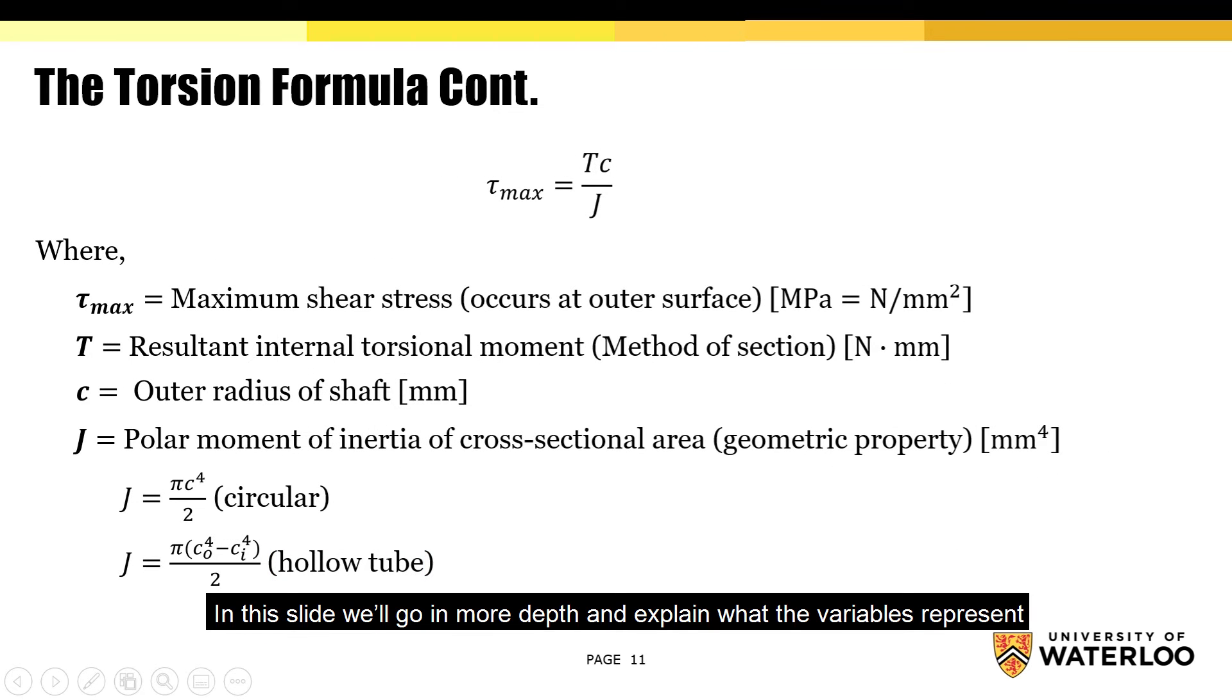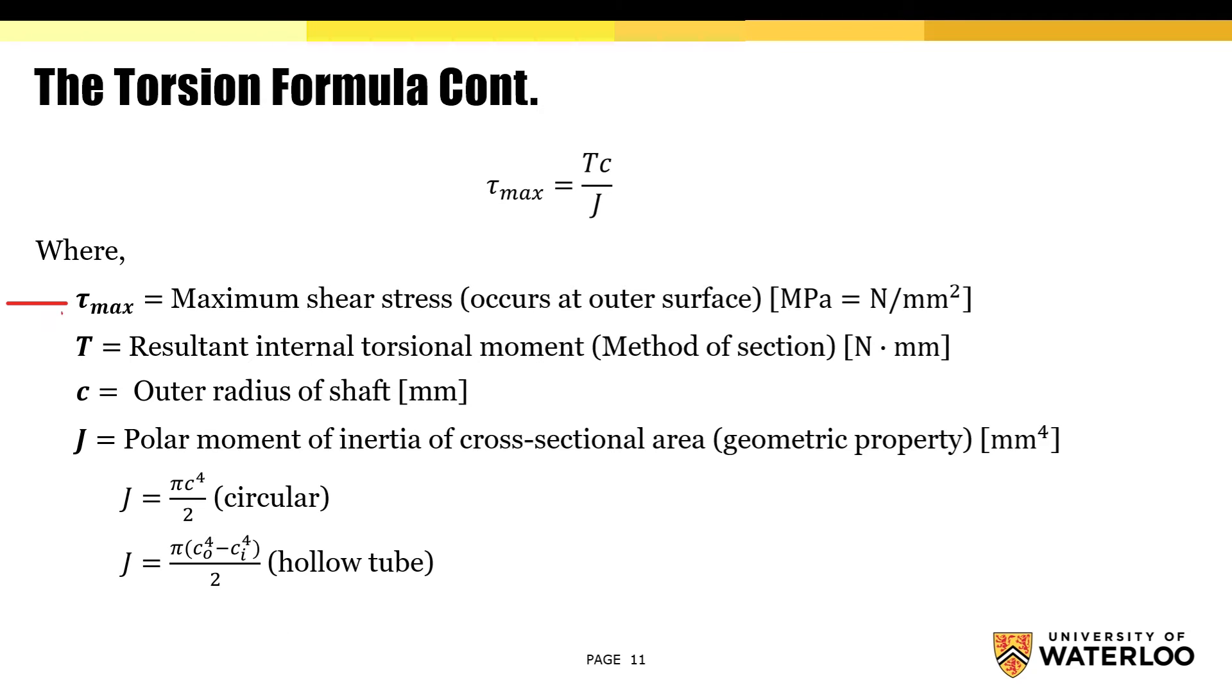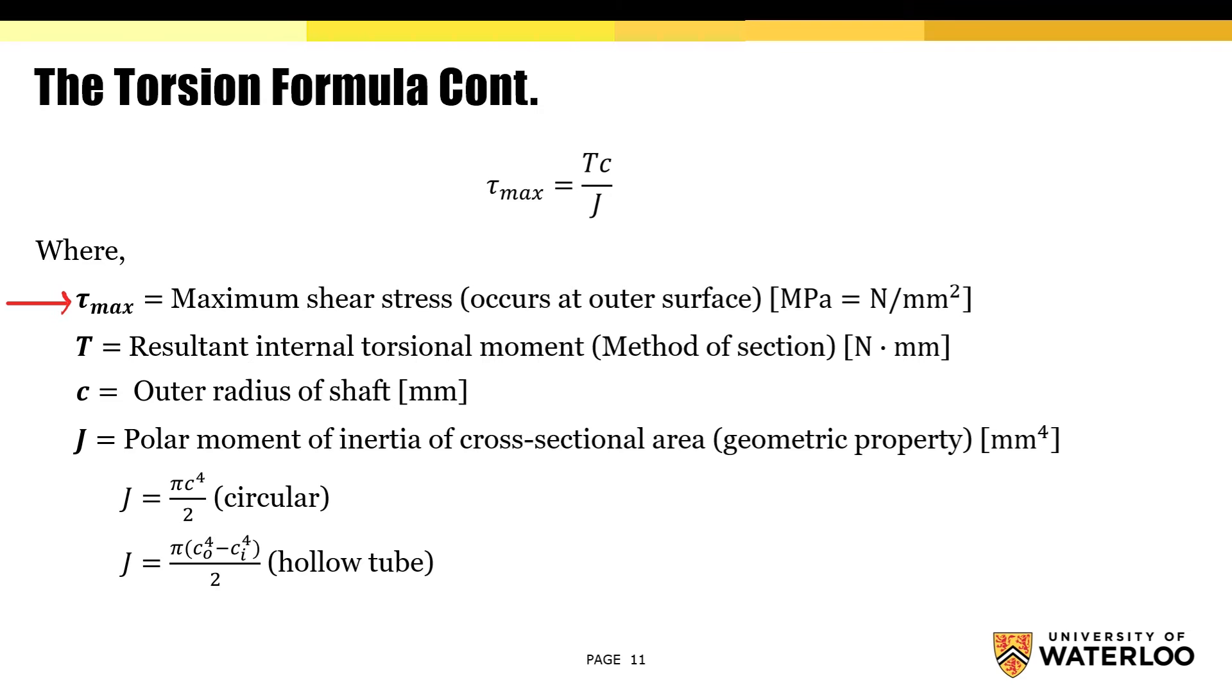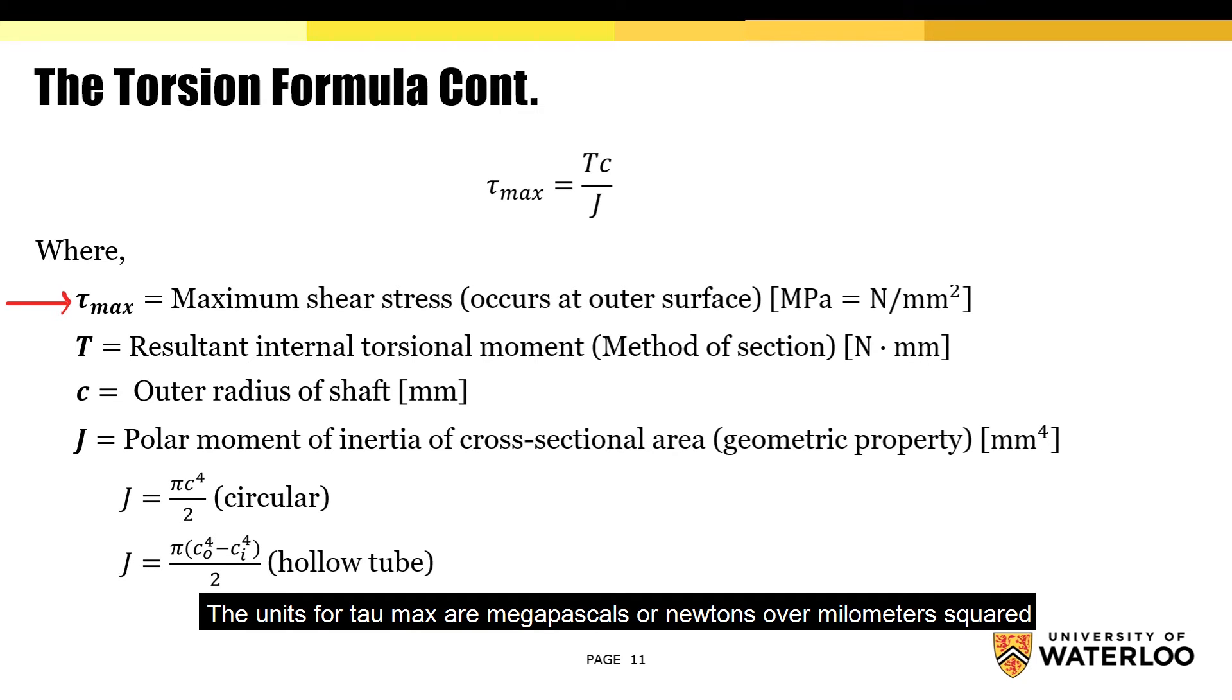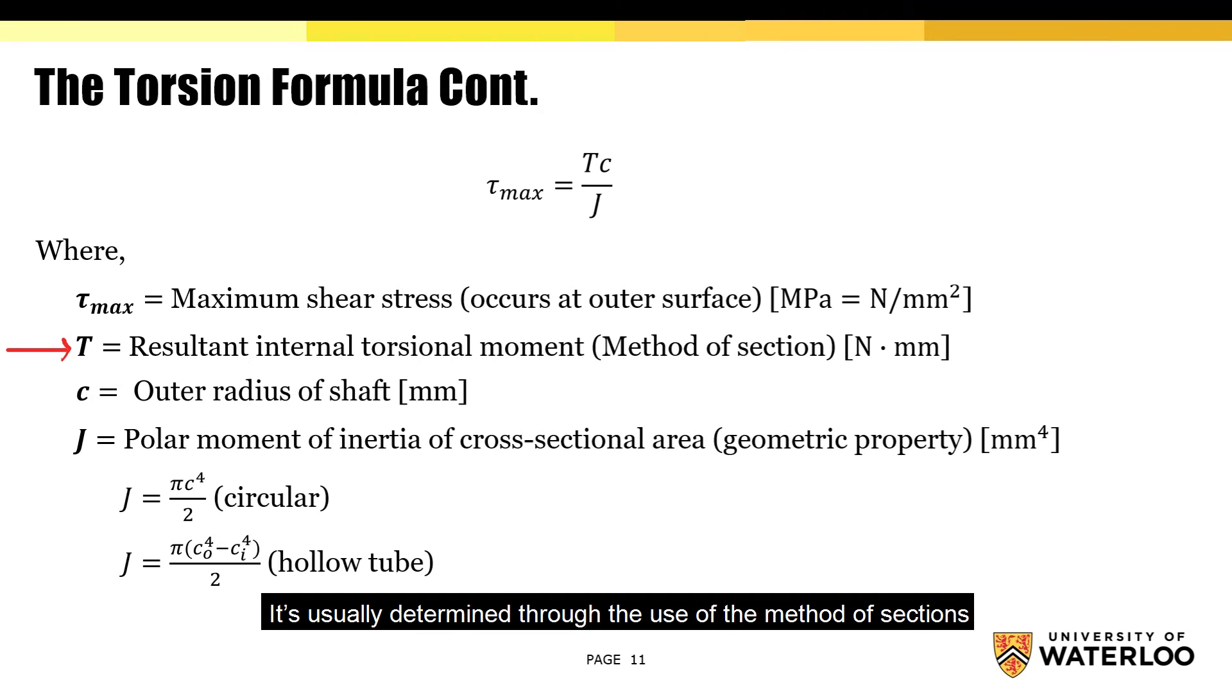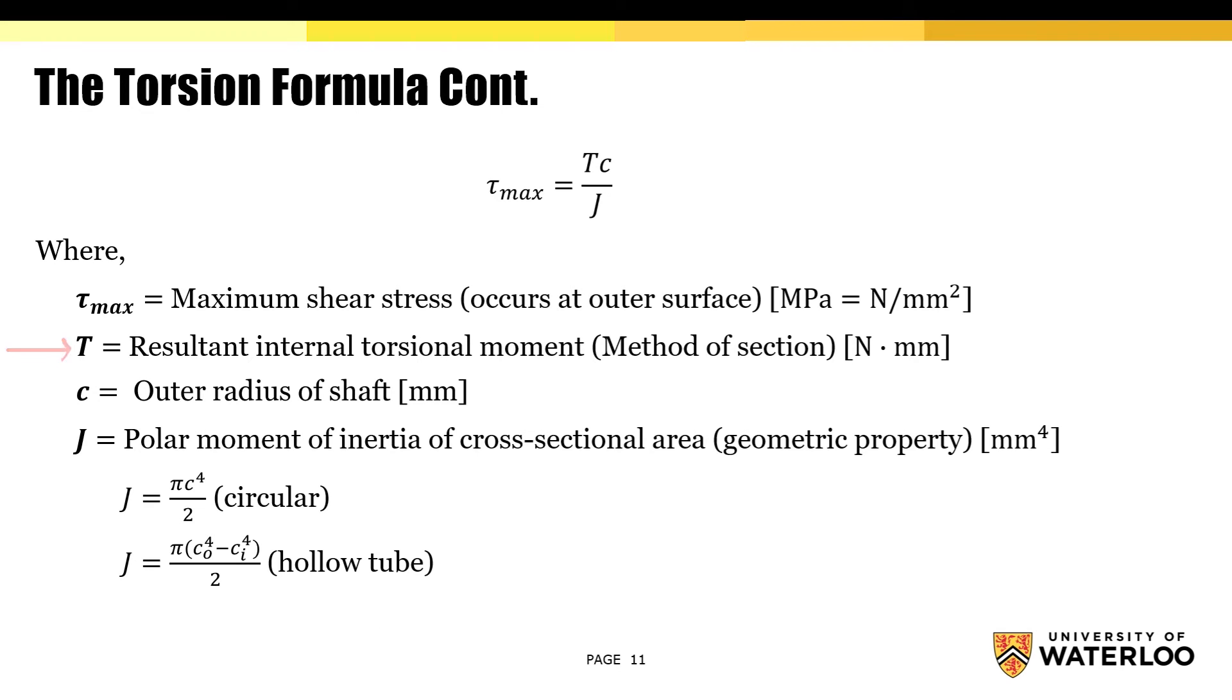In this slide, we'll go in more depth and explain what the variables represent and corresponding units. Tau max represents the maximum shear stress. As previously mentioned, it occurs at the outer surface of the shaft. The units for tau max are mega pascals or newtons over millimeters squared. T represents the resultant internal torsional moment. It's usually determined through the use of the method of sections. The unit for T is newtons times millimeters. C represents the outer radius of the shaft. The unit for C is millimeters.